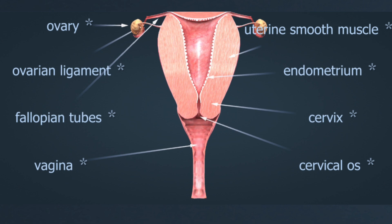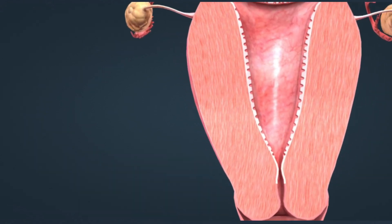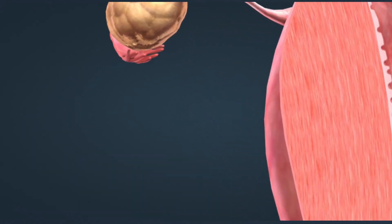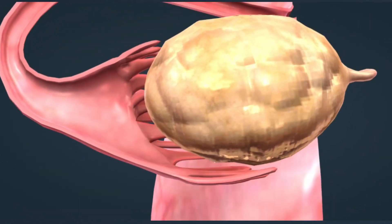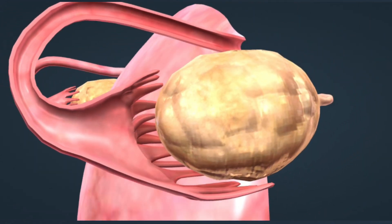Let's get started. The female menstrual cycle represents a series of natural changes that occur cyclically. The cycle starts on the first day of menstrual bleeding. It is 28 days long on average. Ovulation takes place in the middle.